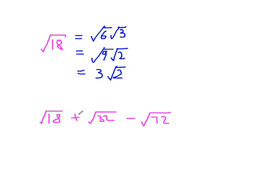We're going to use that to try and add together these three surds. Eighteen is nine twos, so we can take the square root of nine to leave three root two. Thirty-two can be factorised in a number of ways, but the first square number that I thought of was four. Four times eight makes thirty-two, but there's a bigger square number that divides into thirty-two, and it's sixteen. Sixteen times two is thirty-two, so the square root of thirty-two is the square root of sixteen times the square root of two, and the square root of sixteen is four.